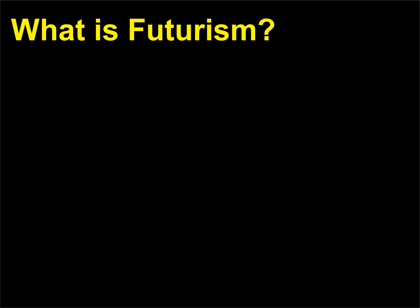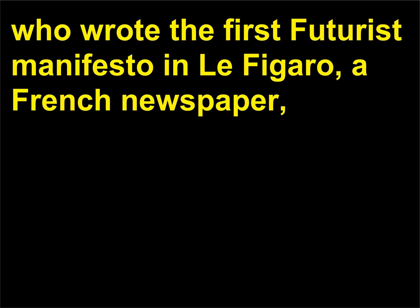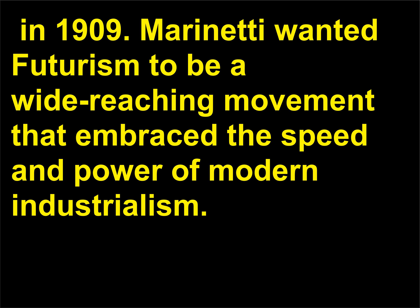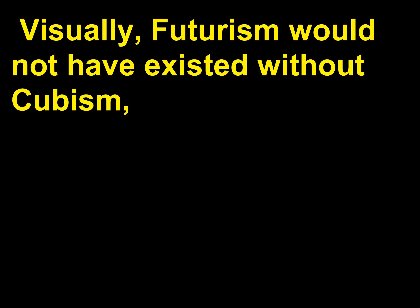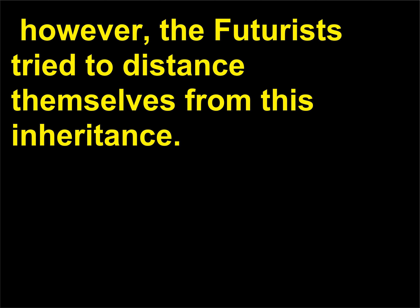What is Futurism? Futurism was an energetic Italian art movement started by the poet Filippo Tommaso Marinetti (1876–1944), who wrote the first Futurist Manifesto in Le Figaro, a French newspaper, in 1909. Marinetti wanted Futurism to be a wide-reaching movement that embraced the speed and power of modern industrialism. The goal was to reject the past and to modernize contemporary culture, violently if necessary. Visually, Futurism would not have existed without Cubism, and many Futurist paintings feature fragmented forms and geometric near-abstraction. However, the Futurists tried to distance themselves from this inheritance.